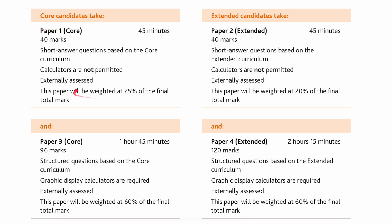For the core curriculum, Paper 1 is worth 25% of the final total mark, but for the extended it is 20% of the final mark. Paper 3, the graphic calculator paper for the core curriculum, is worth 96 marks and runs for 1 hour 45 minutes. It is weighted at 60% of the final mark, the same weighting as Paper 4 for extended.